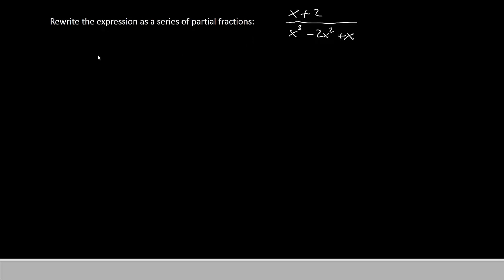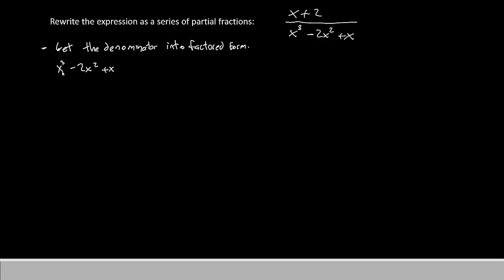As with most things that involve fractions, your first step is going to be to get the denominator into factored form. So let's think about how we could factor x to the third minus 2x squared plus x. They all contain x, so at the very least we should be able to factor an x out of there. If we do factor an x out, x to the third takes away one x giving us x squared, minus 2x squared takes away one x giving minus 2x, and x takes away the x leaving just a one.